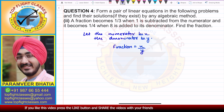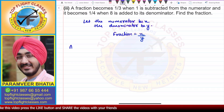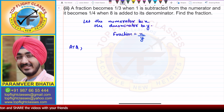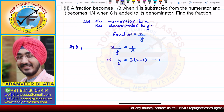For the first case, according to the question, when one is subtracted from the numerator the fraction becomes one-third. So that means (x minus 1) divided by y is equal to one-third. From here we get that y is equal to three times (x minus 1). This is the first equation.